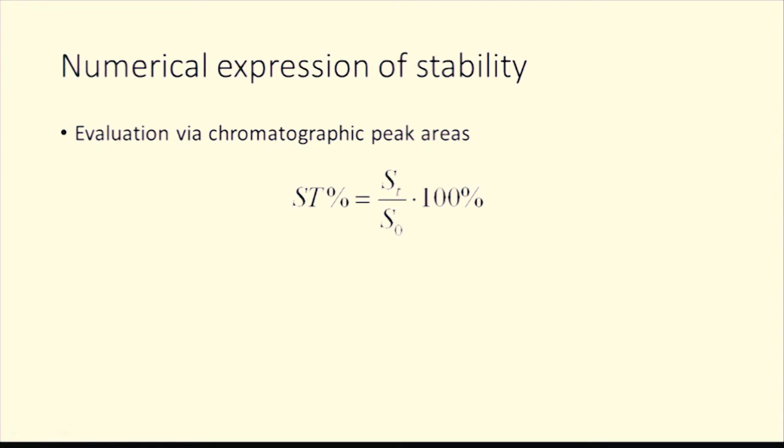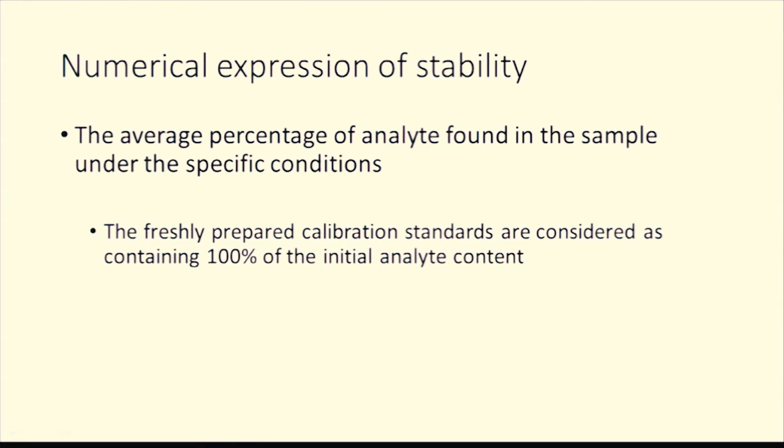Or another way of evaluating stability would be using concentrations where C₀ indicates the concentration in the beginning of analysis and Cₜ indicates the concentration after the period of time. The average percentage of analyte found in the sample under the specific conditions is expressed as the stability. The freshly prepared calibration standards are considered as containing 100% of the initial analyte content.